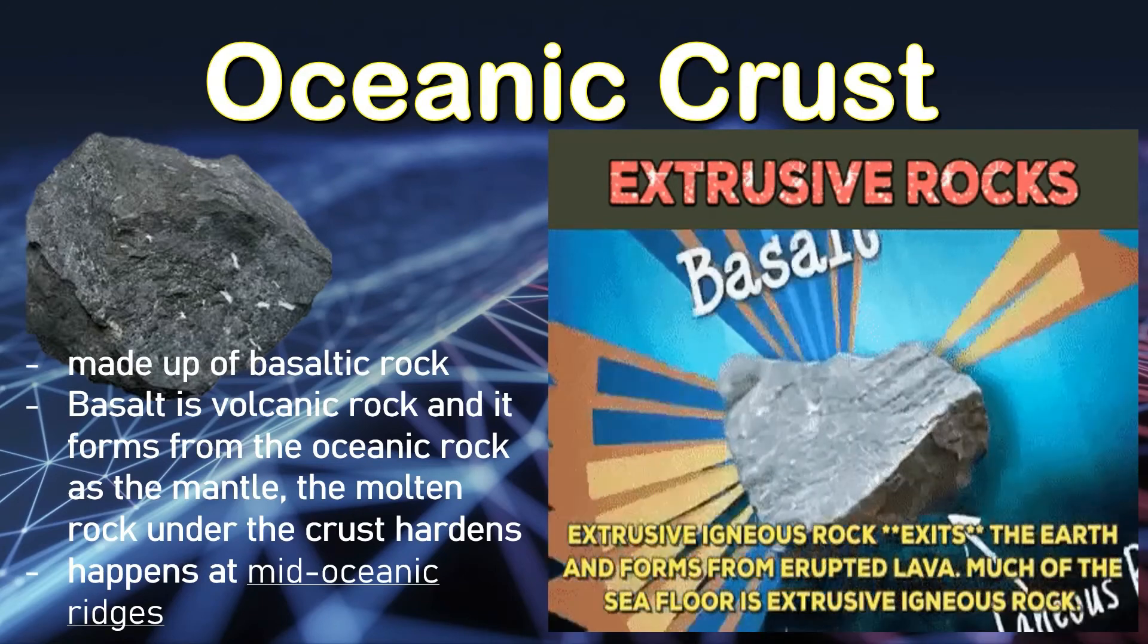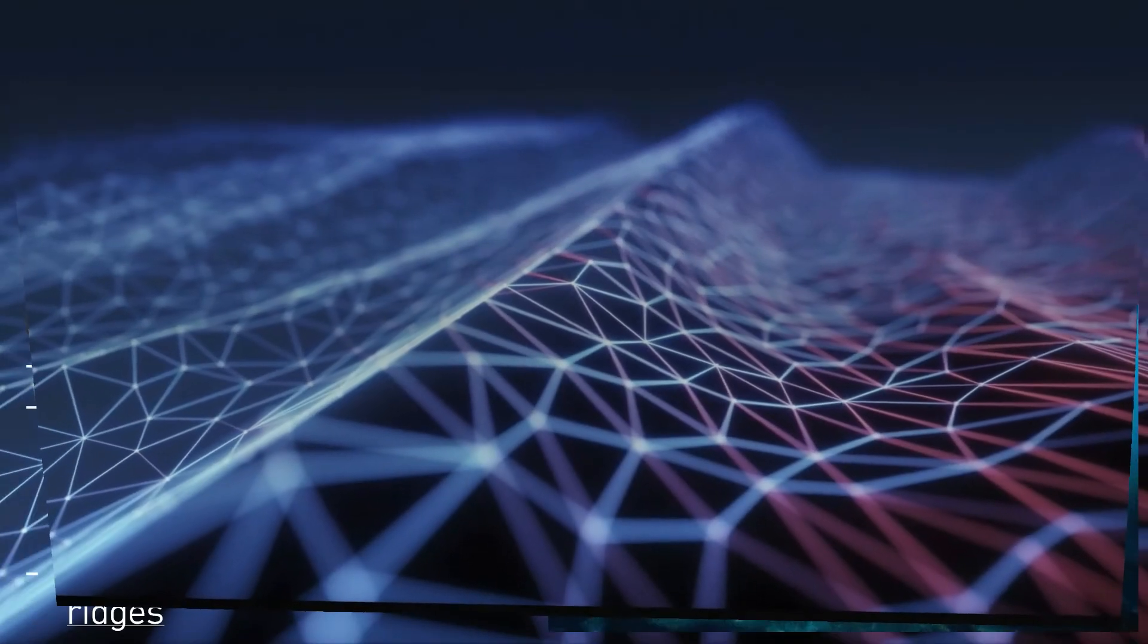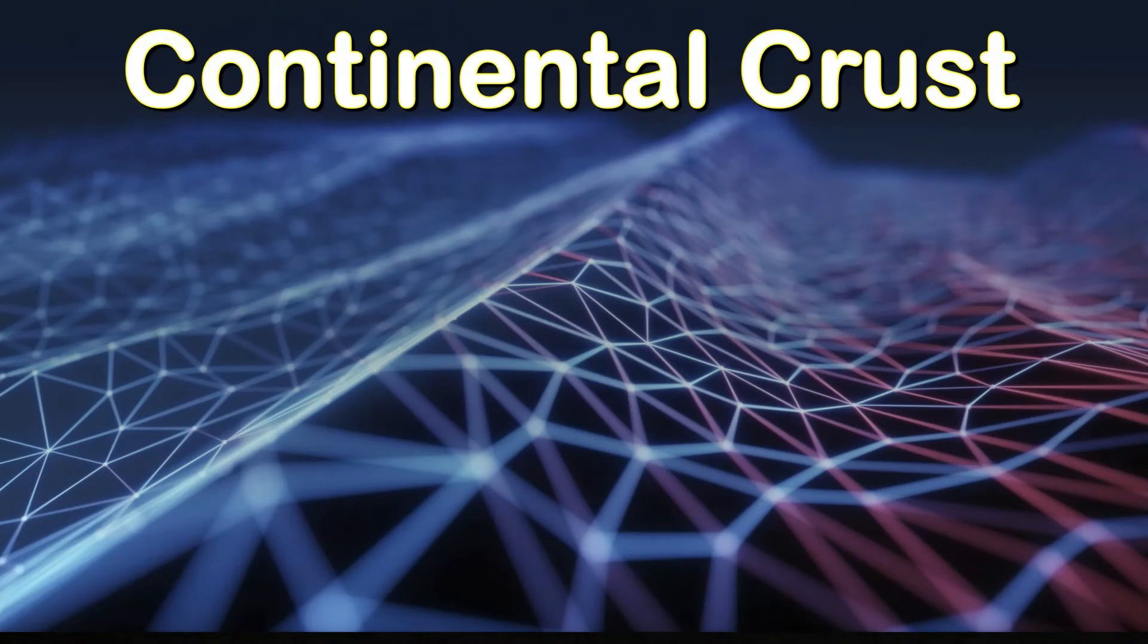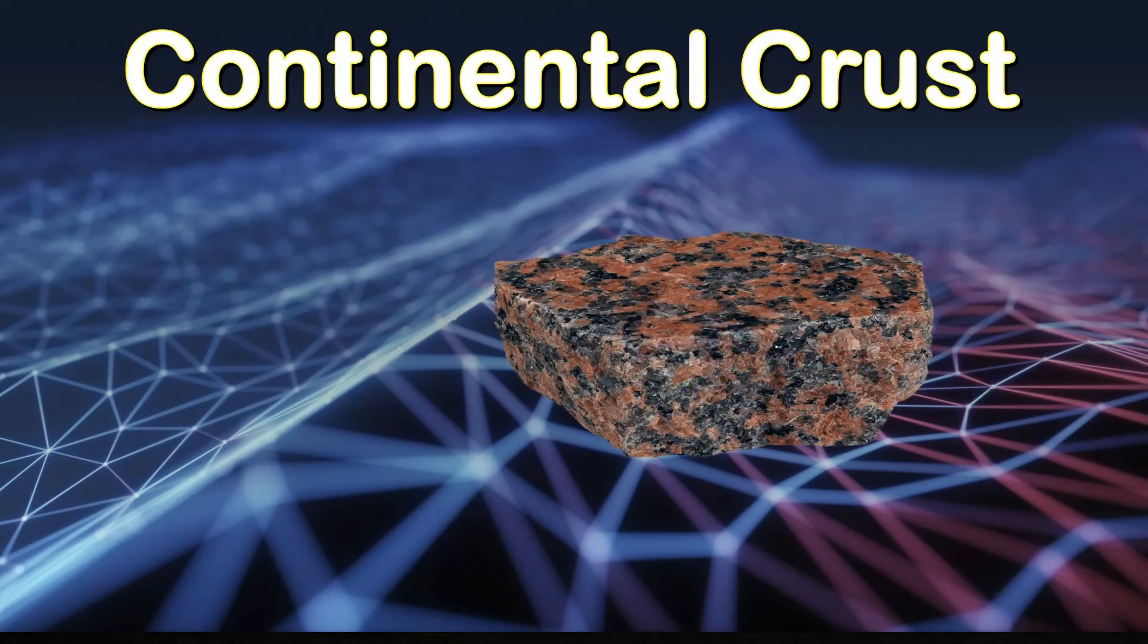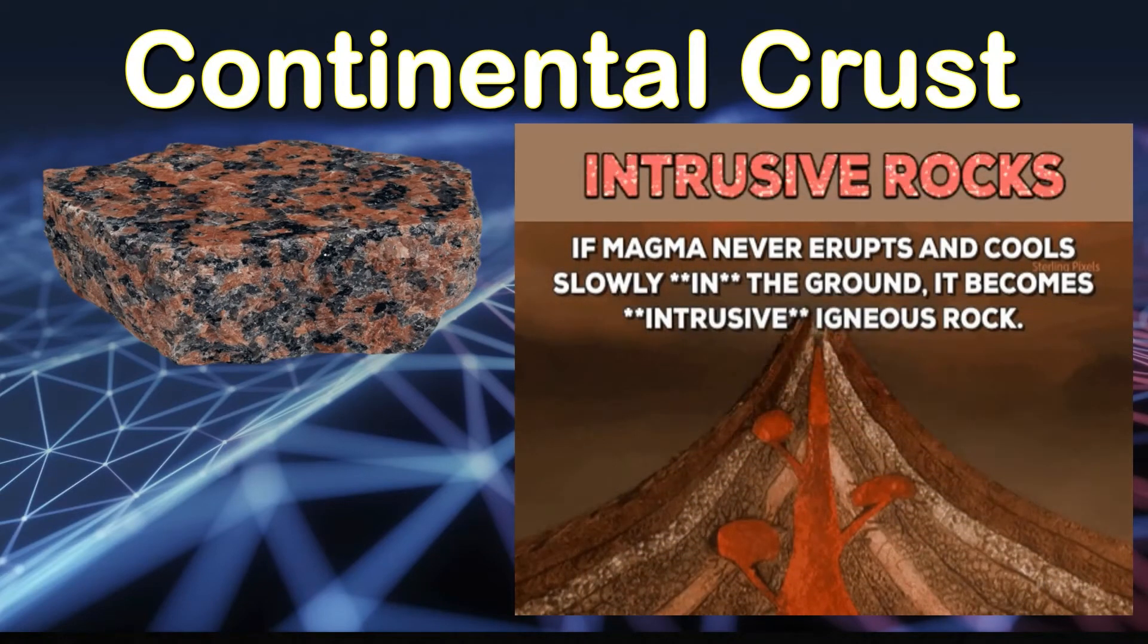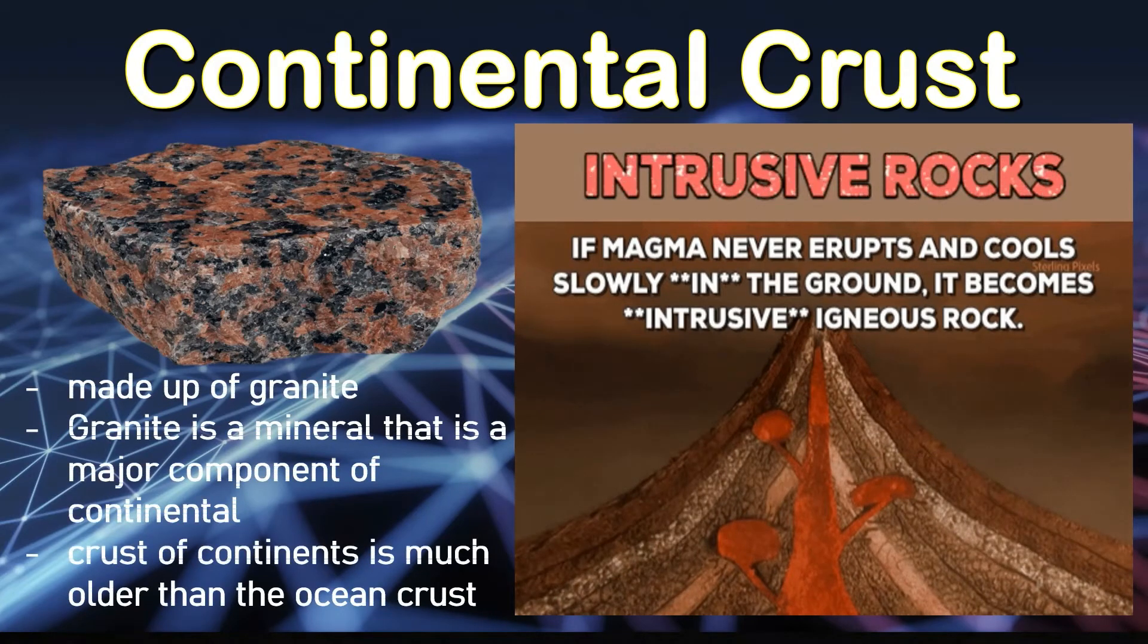What about granite? Now let's tackle the continental crust. Oceanic crust may be heavier and denser, but continental crust is a thicker and older part of the Earth's crust, which is mainly made of granite. It is a mineral that is a major component of continental crust. The crust of the continent is much older than oceanic crust. Unlike the ocean floor, continental crust is not constantly reforming. You can find rocks as old as 4 billion years in continental crust.